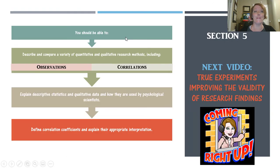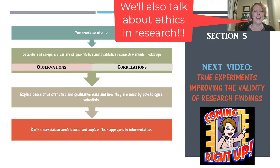That concludes Section 5. You should now be able to describe and compare a variety of quantitative and qualitative research methods, including the six different types of observations. You should also be able to explain descriptive statistics and qualitative data, as well as recognize and define correlation coefficients and explain how they are appropriately interpreted. In our next video, we will be discussing true experiments and how researchers improve the validity of research findings. I can't wait to see you then — bye for now.